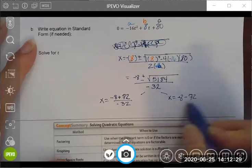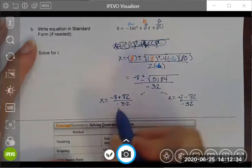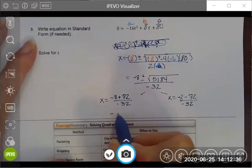And my other solution will be negative 8 minus 72 divided by negative 32.